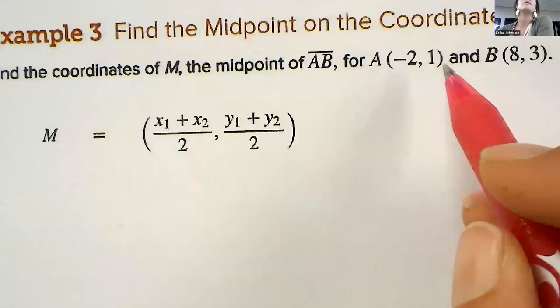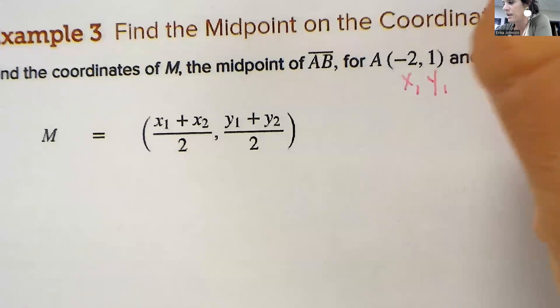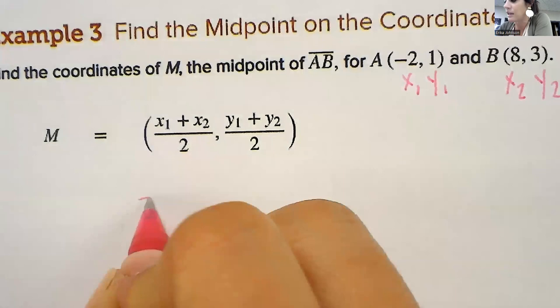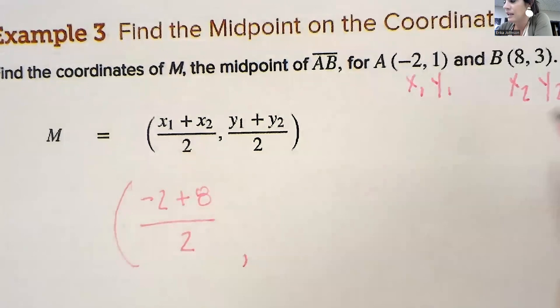It says to find the midpoint of A is at negative 2, 1. So that's going to be x1 and y1. This is going to be x2 and y2. So when I plug in, I add the x's that'd be negative 2 plus 8. Divide that by 2. And then add the y's. 1 plus 3.